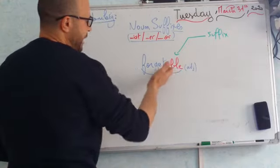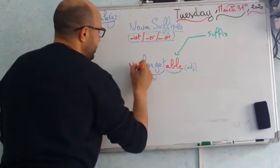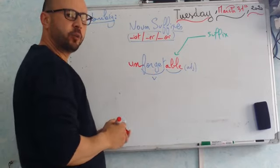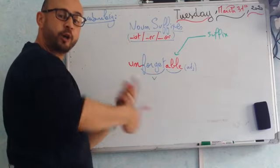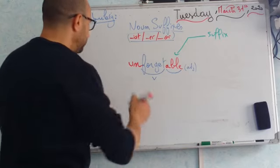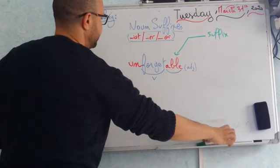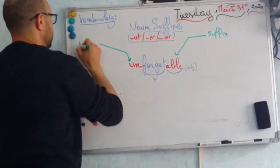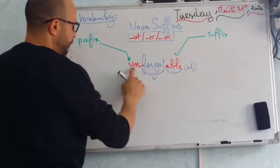An example here, able. Now, imagine I add the letters U-N at the beginning of the word forgettable. It becomes unforgettable. It's a new word. It's the opposite of forgettable. So, here, these letters are called a prefix. This is a prefix. Un is a prefix.